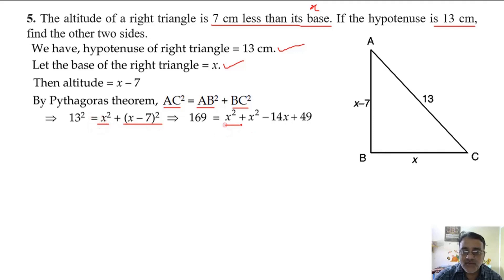X squared plus x squared will become 2x squared. In the same step, you can shift 169 to this side. So if you shift 169 to this side, it will become minus 169, and that will become minus 120. This step is clear.